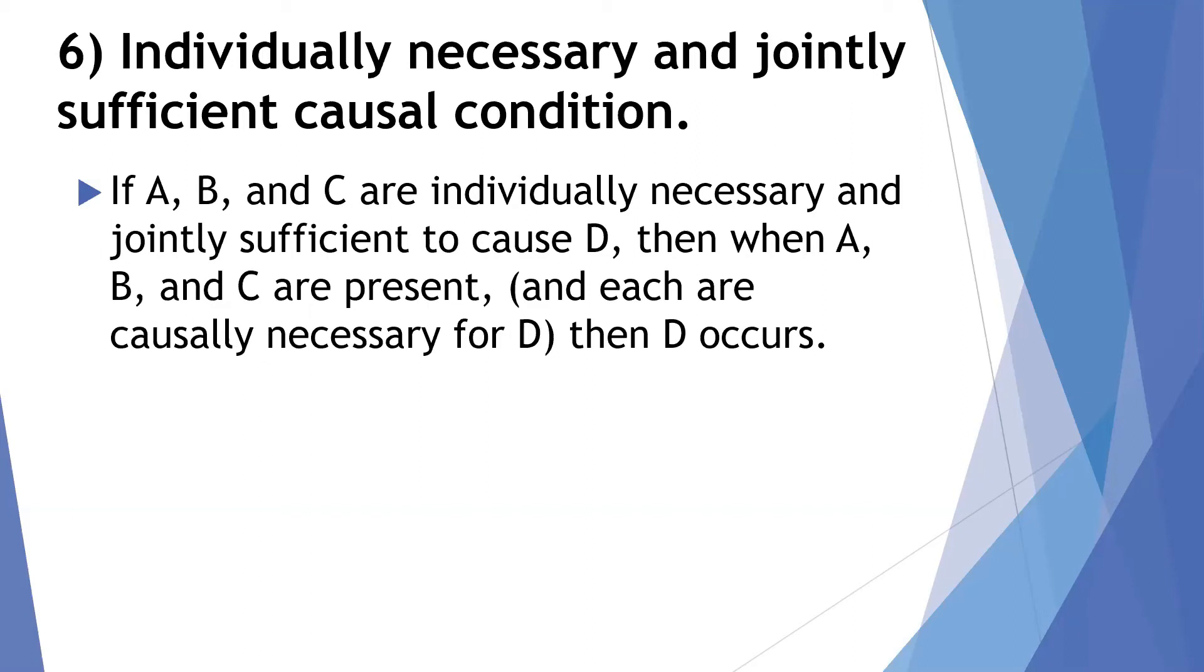So, individually, if you're just talking about B, it's a necessary cause of D, but when you have A, B, and C together, they are, as a group, sufficient to cause D.